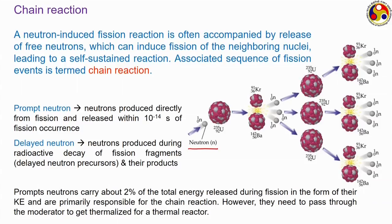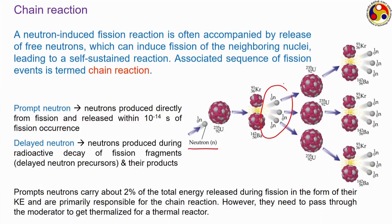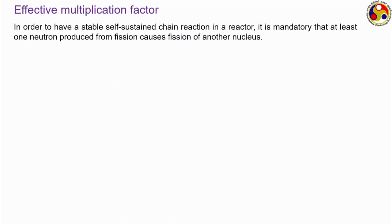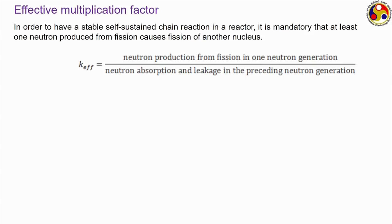To sustain the chain reaction, we must ensure that at least some of the neutrons produced following a fission reaction are capable of inducing fission in other fissile nuclei. This is quantified by something called the effective multiplication factor, or just multiplication factor. To ensure a stable sustained chain reaction, we must have at least one neutron produced during a fission cause another fission reaction. The effective multiplication factor is defined as the ratio of neutrons produced from fission in one neutron generation divided by the neutrons absorbed and leaking in the preceding generation.